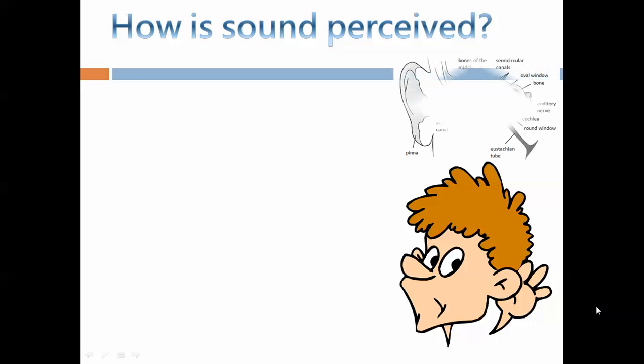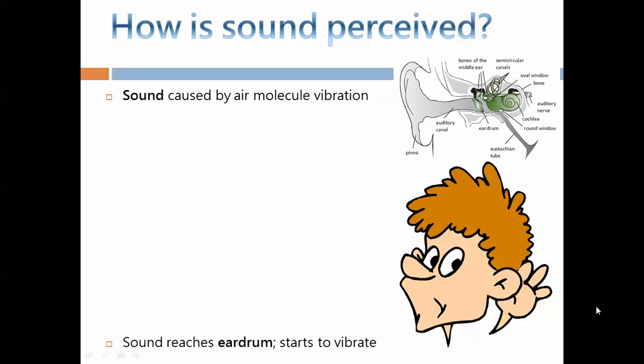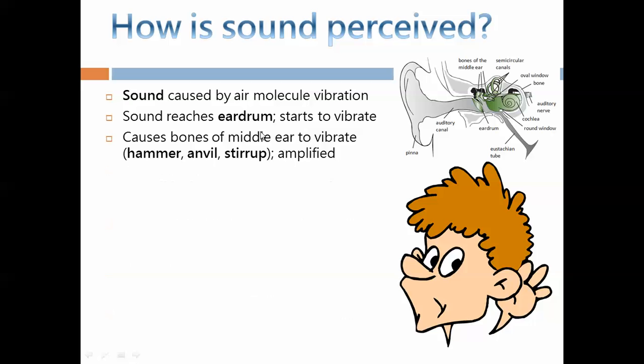So how sound is perceived. Sound is caused by air molecule vibrations and the sound reaches the eardrum and the eardrum will start to vibrate.